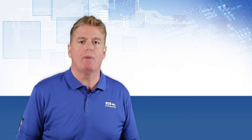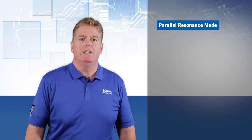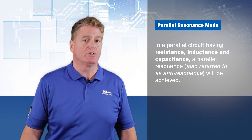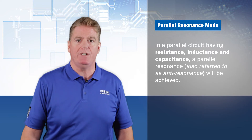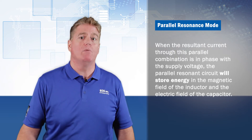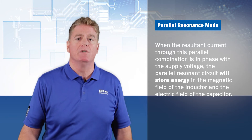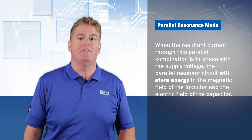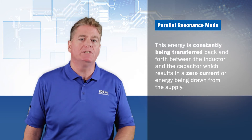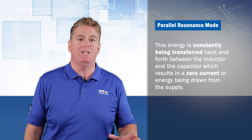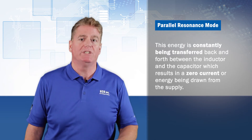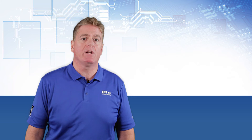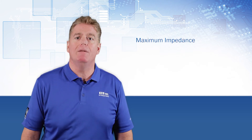Next, let's look at the parallel resonance mode. In a parallel circuit having resistance, inductance, and capacitance, a parallel resonance — also referred to as anti-resonance — will be achieved when the resultant current through this parallel combination is in phase with the supply voltage. The parallel resonance circuit will store the energy in the magnetic field of the inductor and the electric field of the capacitor. This energy is constantly being transferred back and forth between the inductor and the capacitor, which results in zero current energy being drawn from the supply. Characteristics of a parallel resonance circuit include maximum impedance and minimum circuit current.